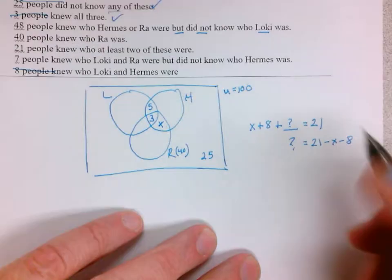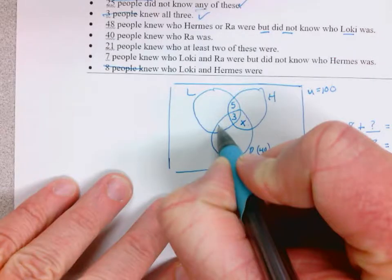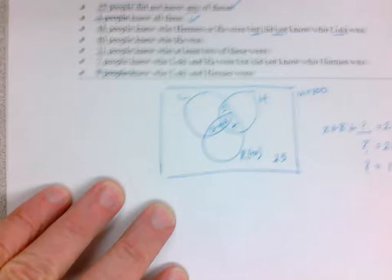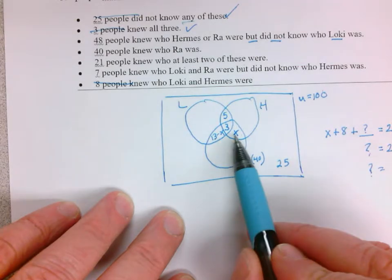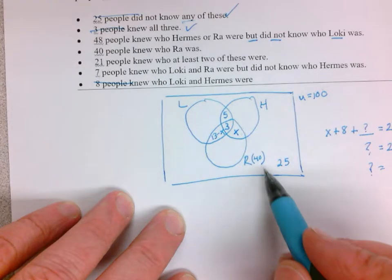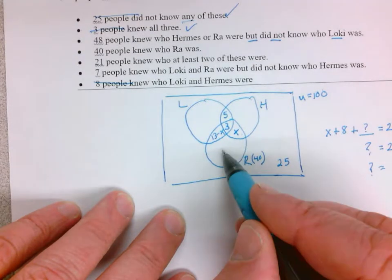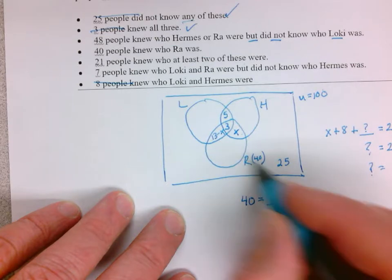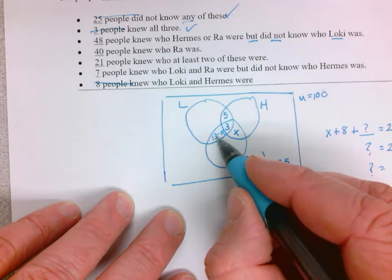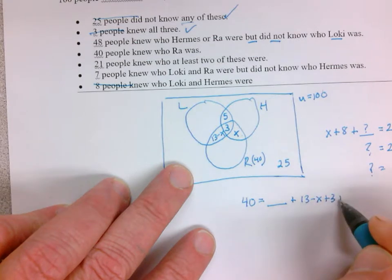Which is nice because if you notice, these two things add up to 13. That's 21. That helps us because now this space here has to add up to 40. So 40 equals some number which we don't know, plus 13 minus X, plus 3, plus X.